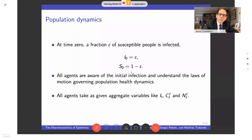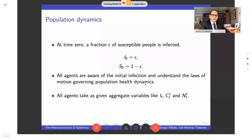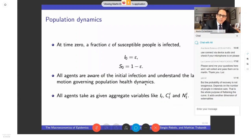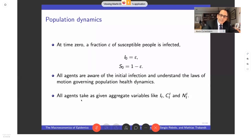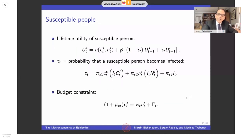In the model, we start with a seed: a fraction epsilon of susceptible people is infected, which can be person-to-person or zoonotic. We make heroic assumptions: agents are aware of the initial infection and understand the laws of motion governing population health dynamics, which is certainly not true in reality. Robustness therefore becomes very important. What is definitely true for almost all of us is that agents take aggregate variables as given — whatever I do doesn't affect the aggregate number of infected people.